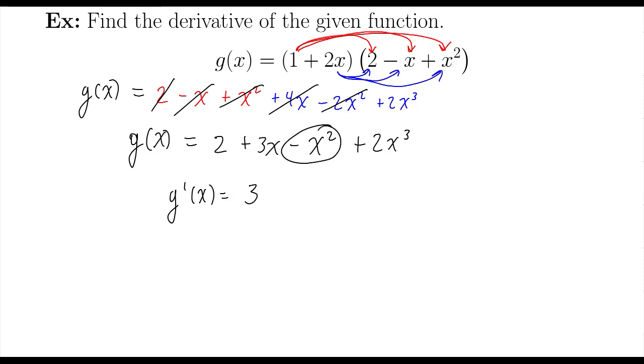Here, this term here. Negative x squared. Understood negative 1. So 2 times negative 1 is negative 2, x to the, subtract 1 from the exponent. 2 minus 1 is 1. So it's x to the first power. But I'll leave that 1 off because it's understood.